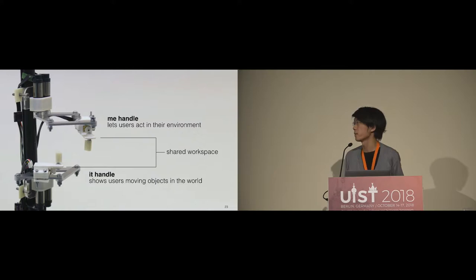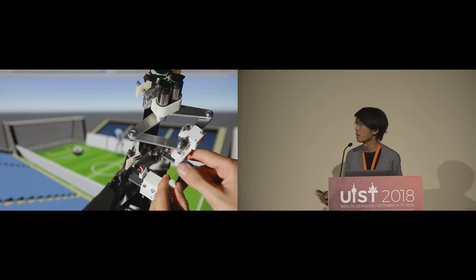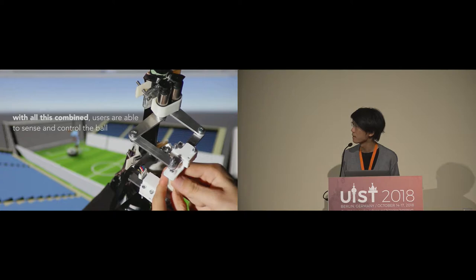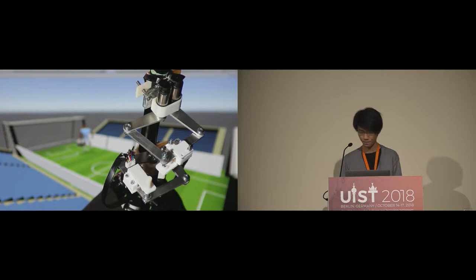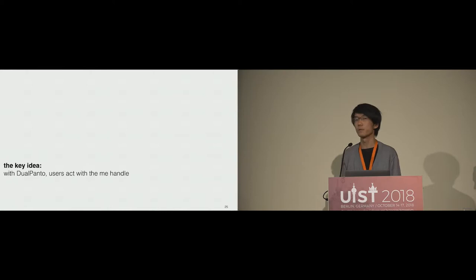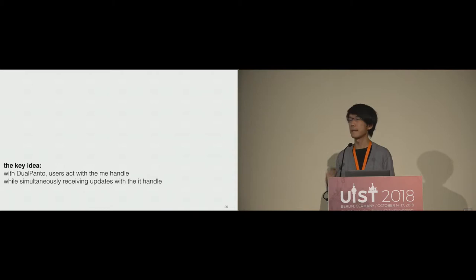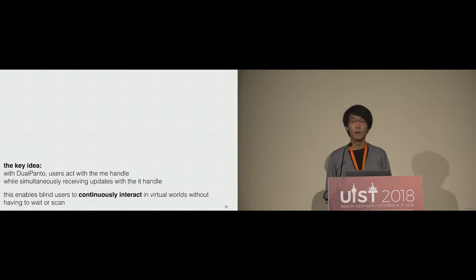The key idea is that the me handle and it handle share the same workspace. This means you combine both things — the user can approach the soccer ball, take it, give a kick, and ultimately score a goal. With Dual Panto, the user can act in a virtual world while simultaneously sensing information about it, enabling blind users continuous and spatial interaction without any necessity of seeing, waiting, or scanning the virtual world.